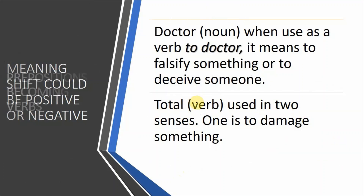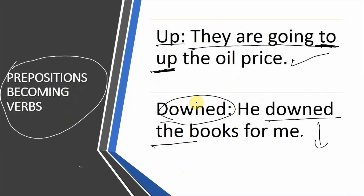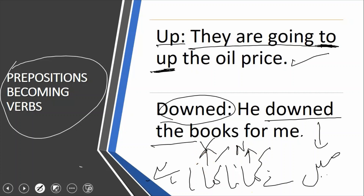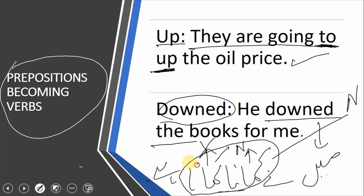Lecture ختم کرنے سے پہلے اردو میں conversion کی مثال دیکھتے ہیں۔ جیسے: میں نے کھانا کھانا ہے — یہاں پہلا کھانا as a noun use ہوتا ہے اور دوسرا کھانا as a verb۔ بالکل same category ہے لیکن ایک as a noun اور ایک as a verb — یعنی verb کو ہم فعل کہتے ہیں اور noun کو اسم۔